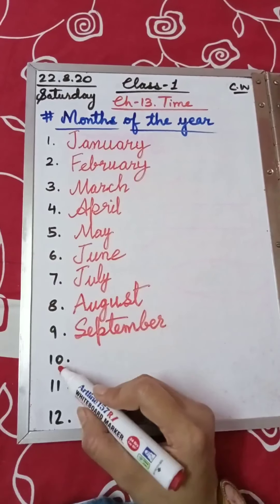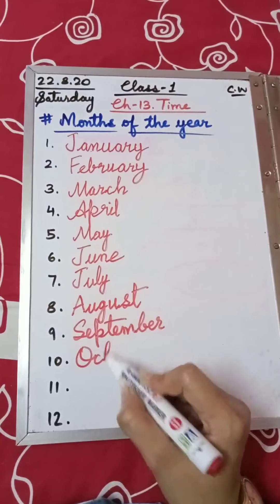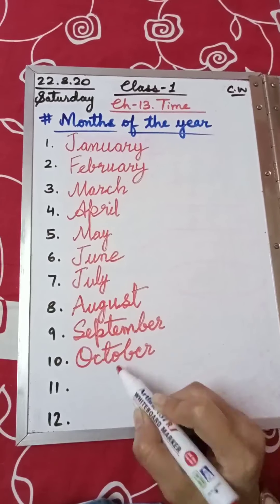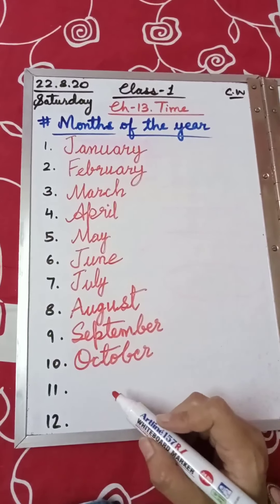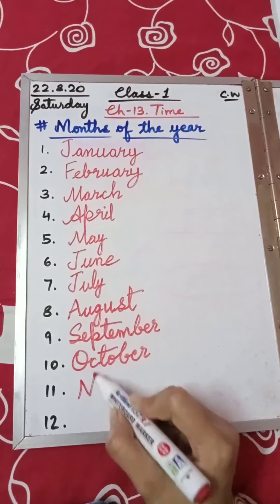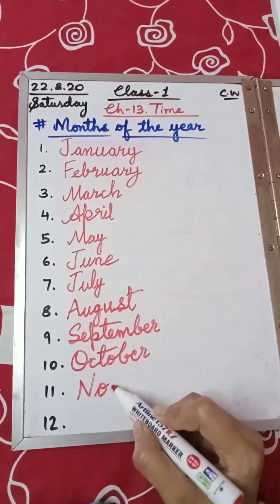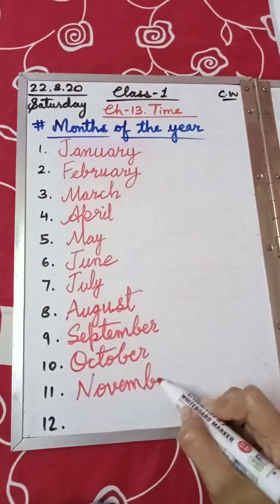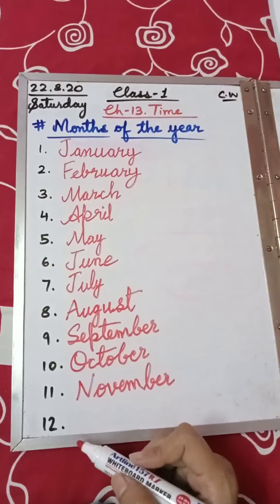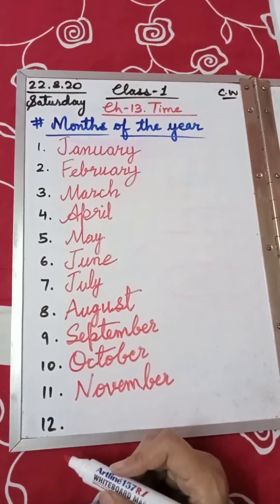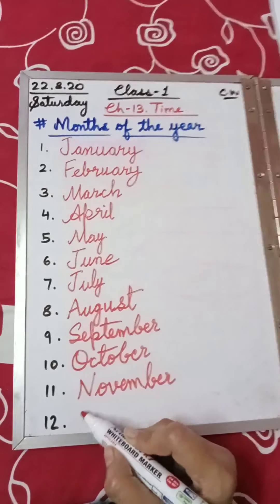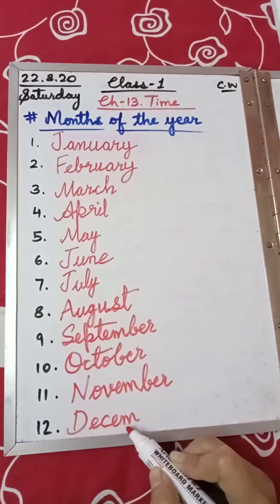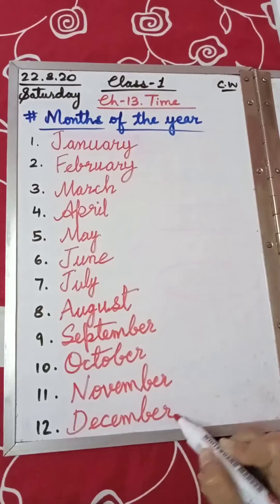October is the 10th month — O-C-T-O-B-E-R. This way you can learn the spellings easily. After October, the next month is November. And the last month of the year is December — your Christmas day. D-E-C-E-M-B-E-R. So here we have done all the months of the year.